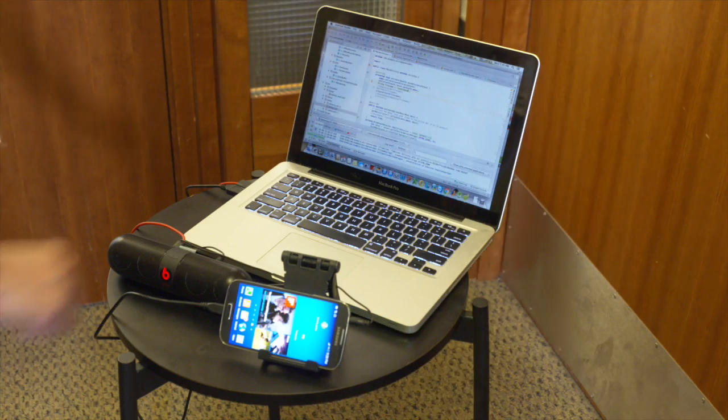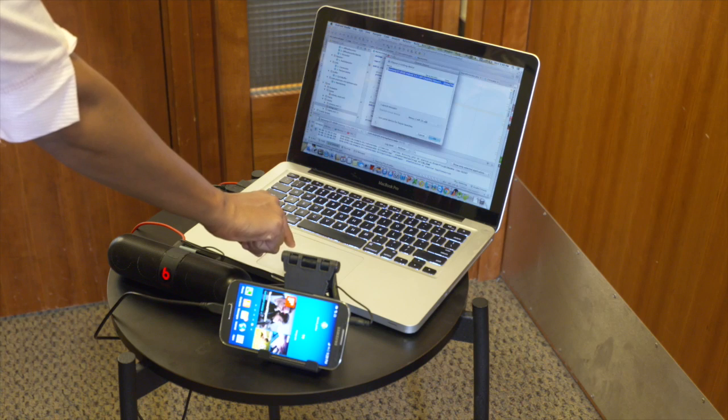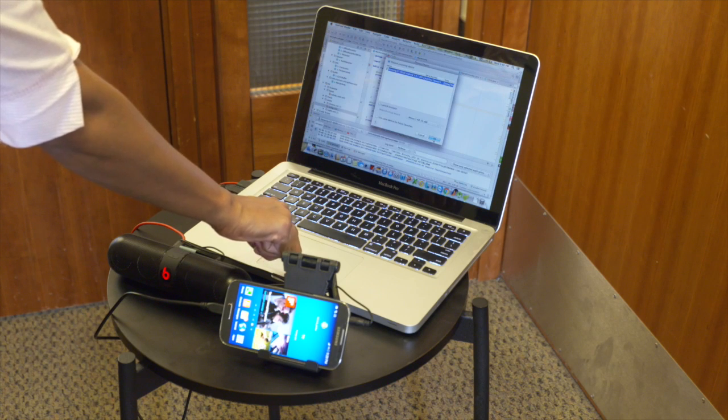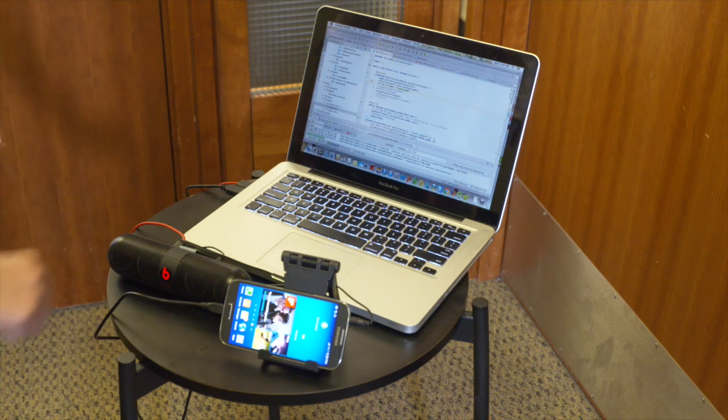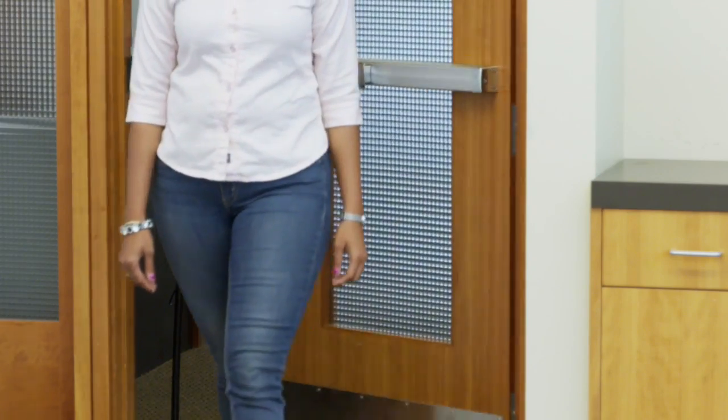We present CovertBand, a system that can track movement in 2D using only off-the-shelf speakers and microphones. We show that CovertBand can accurately track the motion of multiple people...